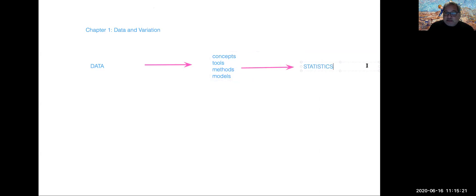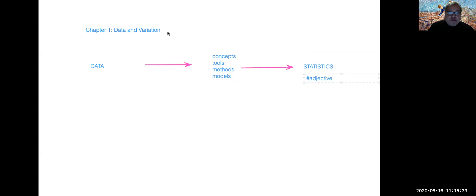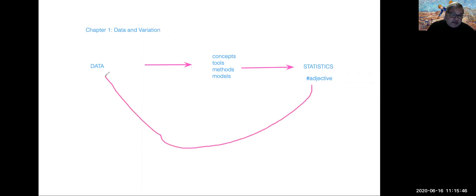Data and statistics are two very different things. A statistic is essentially a numerical adjective. As we all know, adjectives are useful in providing insights about something — in this case, data will be what the adjectives are modifying.